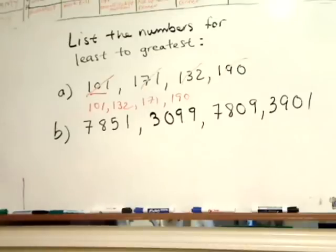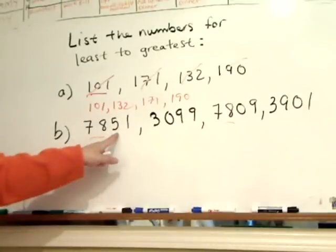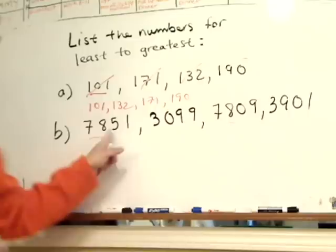Let's look at this number here. Say it out loud, or to yourself: 7,851, 3,099, 7,809, 3,901. So, you know these two numbers are the biggest, right? But if you look at the second digit here, compared to that one, this one is the biggest.